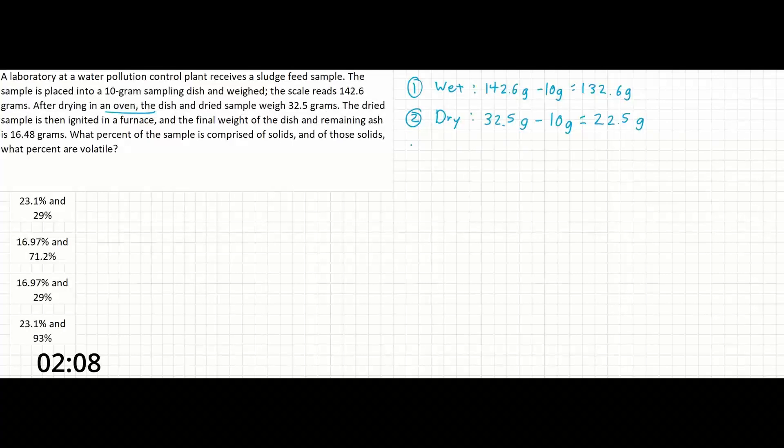Finally, the sentence about the furnace provides our information about the ash and the volatiles. So the sentence gives us the dish and ash being 16.48 grams, meaning that the ash alone is 6.48 grams.